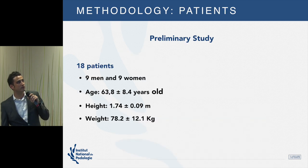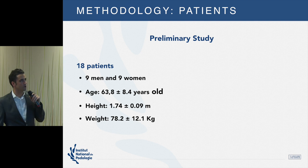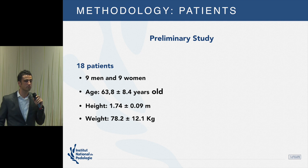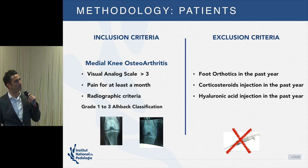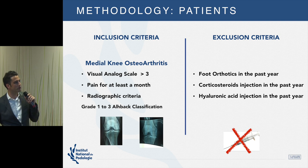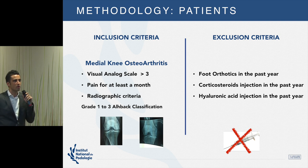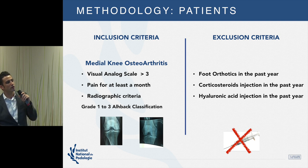This is a preliminary study. We currently have 18 patients with the following characteristics: the main inclusion criteria are medial knee osteoarthritis, a visual analog scale pain score above three for at least one month, and Kellgren-Lawrence classification grade one to three on radiography. The main exclusion criterion is that patients had no foot orthotics or other treatments in the past year.